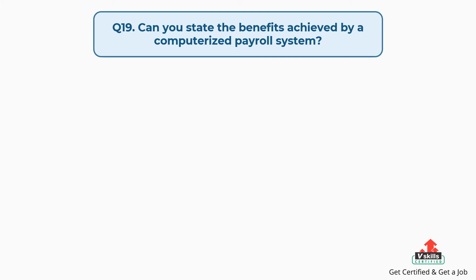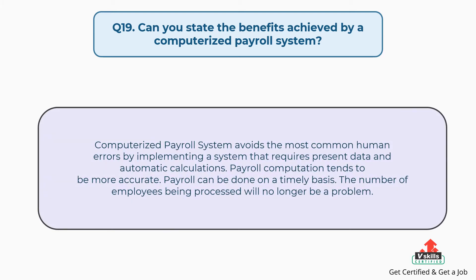Question number nineteen: Can you state the benefits achieved by a computerized payroll system? The answer is, a computerized payroll system avoids the most common human errors by implementing a system that requires present data and automatic calculations. Payroll computation tends to be more accurate, payroll can be done on a timely basis, and the number of employees being processed will no longer be a problem.